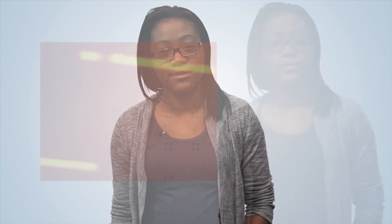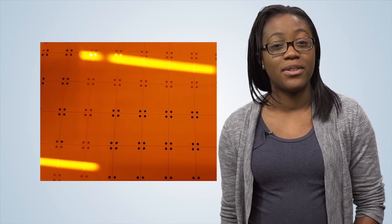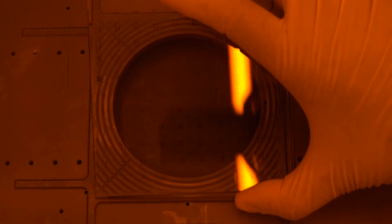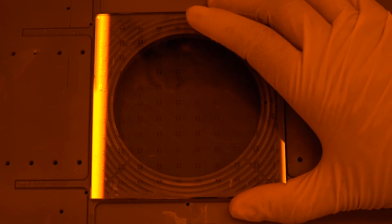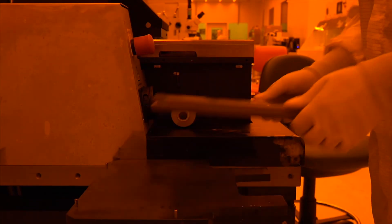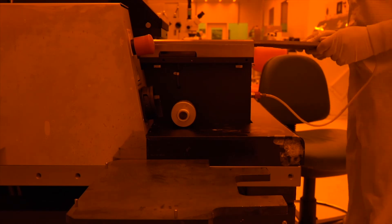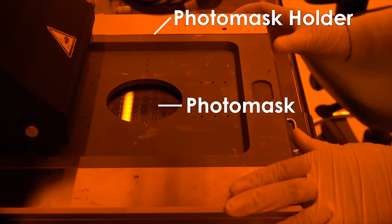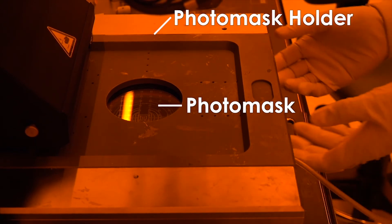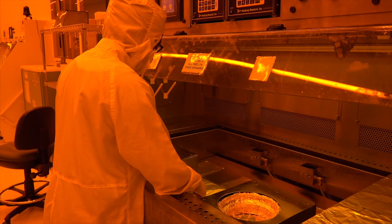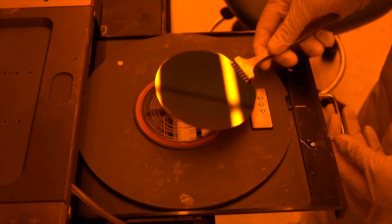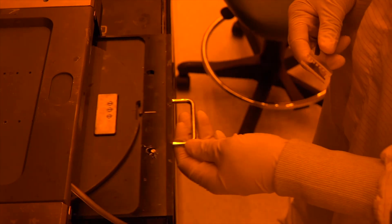Next, we put our photomask into the instrument. The photomask contains the pattern we wish to transfer to our substrate. Here, we see the pattern on the photomask. And looking under a microscope, we can see the pattern more clearly. We place the photomask on the plate. Small holes in the plate lead to a vacuum line that provides suction to firmly hold the photomask in place. We then carefully take the plate and slide it into the instrument. The plate locks into place. We take our wafer that is coated with photoresist and place it onto the wafer platform. Again, vacuum suction holds the wafer in place. We slide the platform into place.